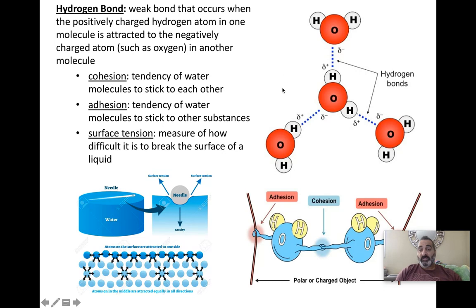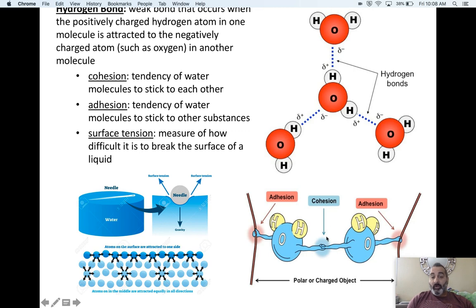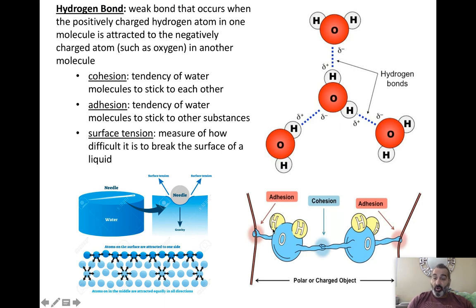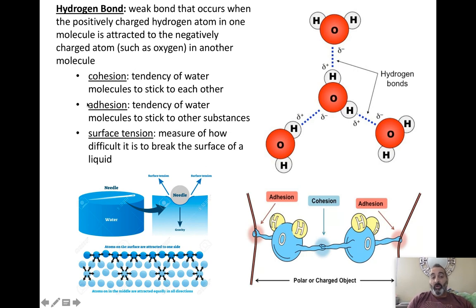Because water does this hydrogen bonding, water has a tendency to stick to itself — that's called cohesion. When water sticks to other things, that's called adhesion. Water, because it's polar, will stick to other things that are also polar, charged, or ionic. We put wax on our cars to prevent water from sticking. Wax is non-polar, so water will not hydrogen bond to it, and the water will roll right off your car.